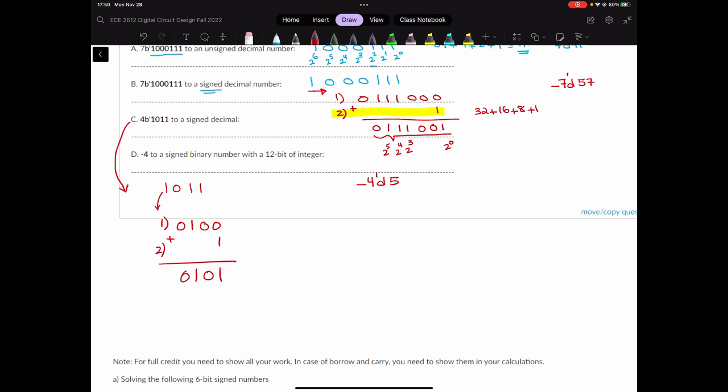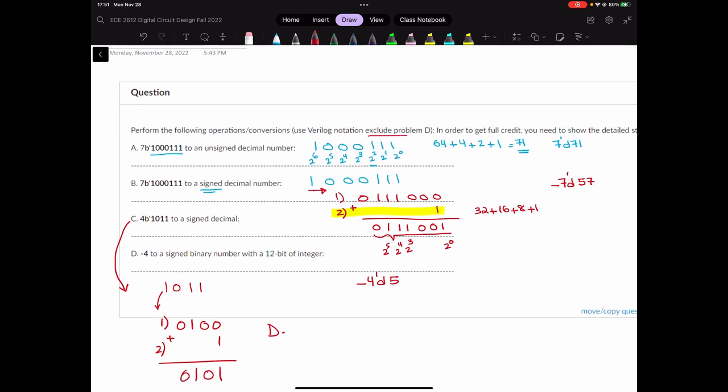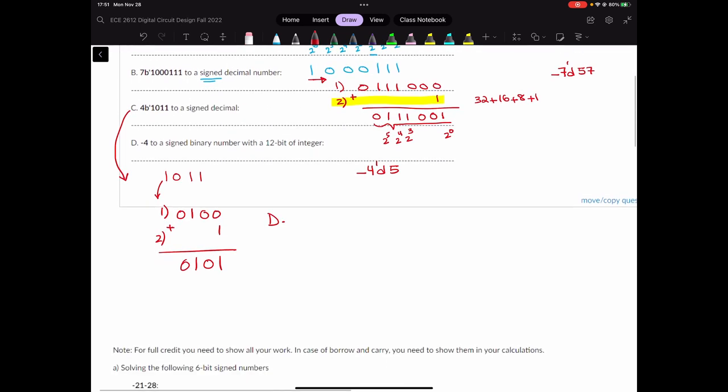Now the next number that we have is, I mean the next part is part D. So I'm going to write part D over here. We want to convert negative 4 to a signed binary number with a 12-bit of integer. First thing, first of all, I mentioned in the question that I don't need this one in Verilog notation. This is a negative number, so I'm sure that I should have a 1 on the most significant bit. Now let's find negative 4 first.